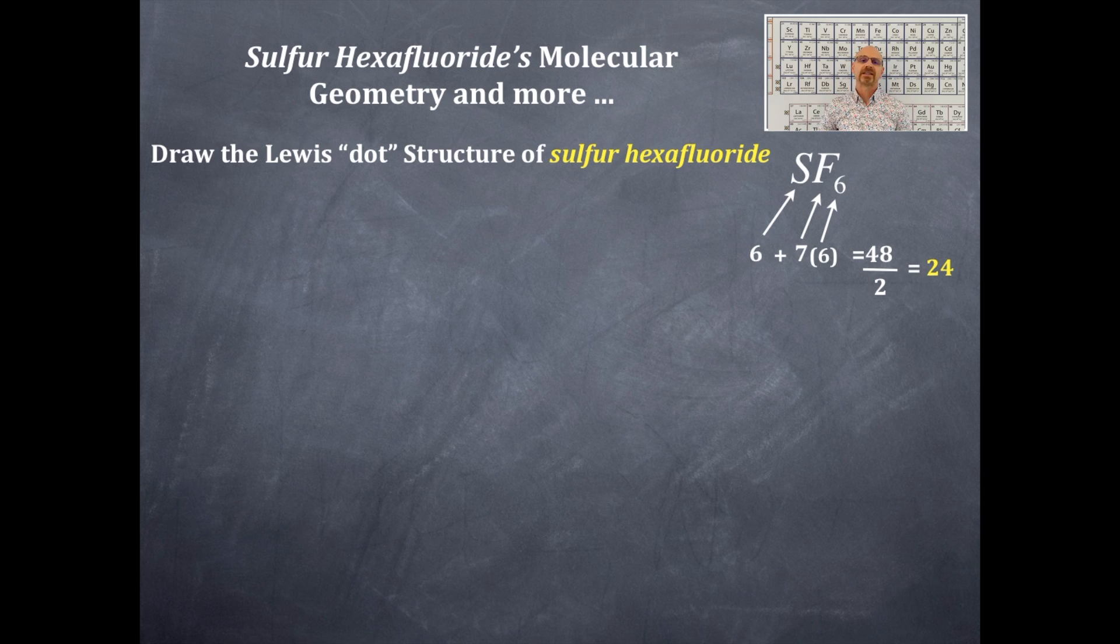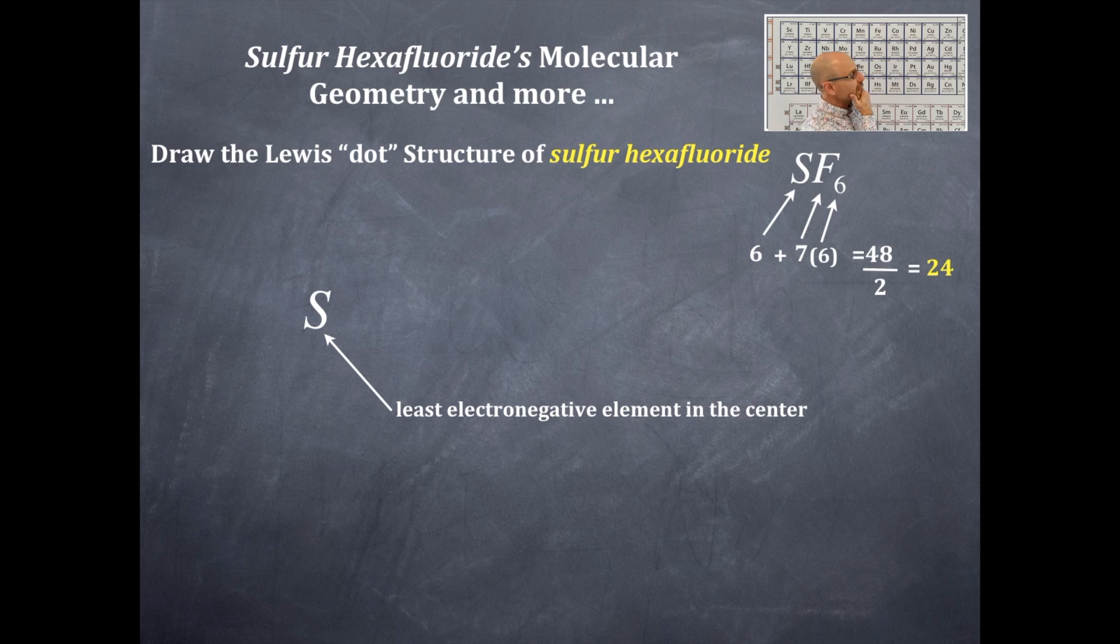Now we're gonna find the least electronegative element that goes in the middle. That's gonna be the sulfur. Then the fluorines are gonna surround that sulfur and then you're gonna ask yourself where is sulfur. Can I fit six fluorines? Can I fit six of anything around that sulfur? And sulfur is what period? Period three. So therefore sulfur can be hypervalent and it's gonna exceed the octet rule.